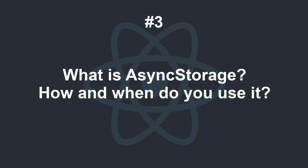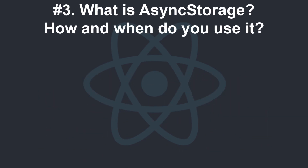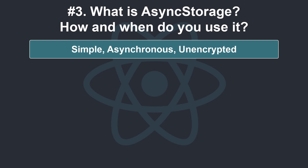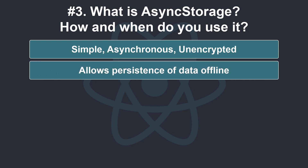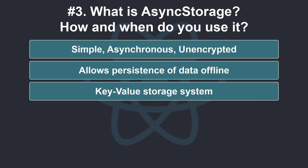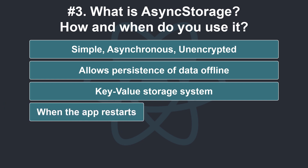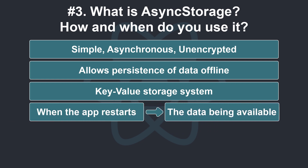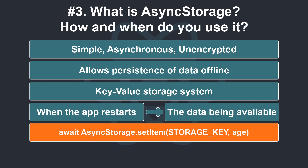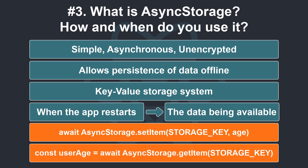What is async storage? How and when do you use it? Async storage is a simple, asynchronous, unencrypted by default module that allows you to persist data offline in React Native apps. The persistence of data is done in a key-value storage system. Persisting data in a mobile app has benefits such as when the user restarts the app, the data or the setting variables are available in the state they left before closing the app. For example, with this code we save the user's age with the identifier of a storage key, and with this code we retrieve the user's age with that key.